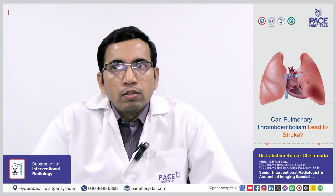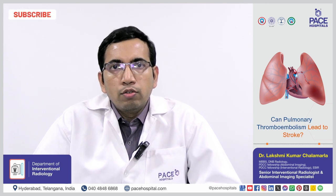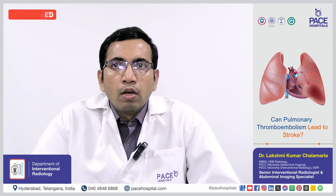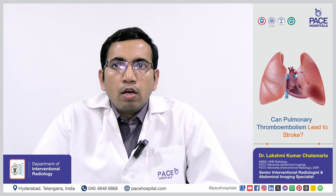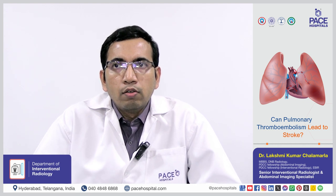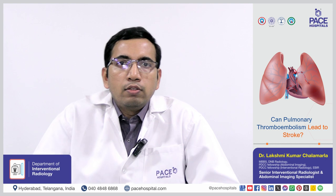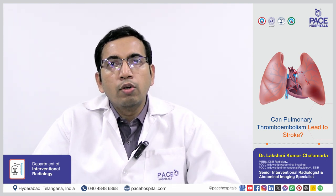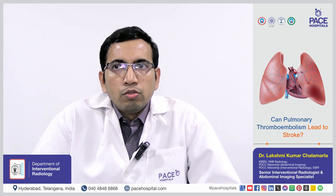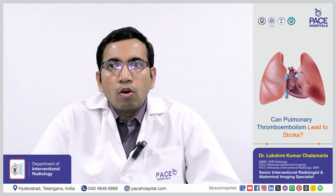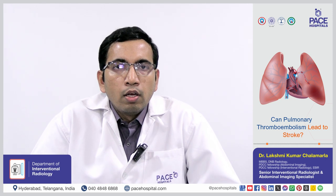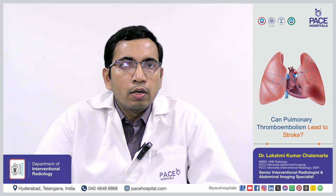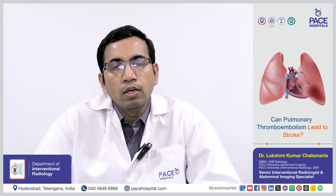Although pulmonary thromboembolism cannot directly cause brain stroke in most cases, a patient with pulmonary thromboembolism — that is, a venous clot — also has risk factors for arterial clots. For example, a cancer patient with a venous clot also has a tendency to develop arterial clots, and if an arterial clot forms in the brain arteries, it can lead to brain stroke. So brain stroke and pulmonary thromboembolism can coexist in a patient.